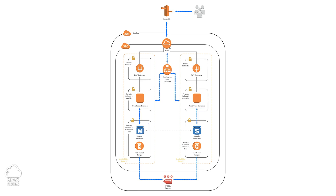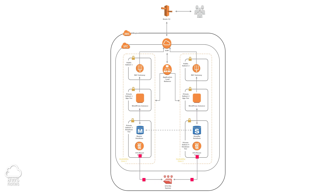I want you to pay attention to the flow of the arrows. When traffic comes from the internet, it must go through the application load balancer before it can access the web servers. The web servers are only going to accept internet traffic from the application load balancer, and the database servers are only going to accept traffic from the web servers. And finally, the EFS is only going to accept traffic from the web servers.